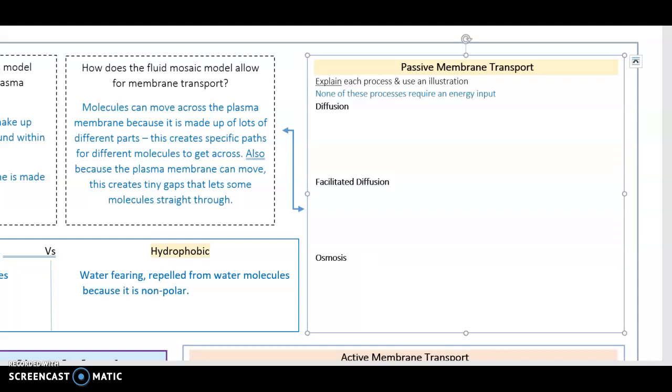So let's start with diffusion. This is the simplest version of all of the way things move across membranes, and it is the net, means overall, passive, means requires no energy, movement of molecules across a semi-permeable membrane, i.e. the plasma membrane, from an area of high concentration of these molecules to an area of low concentration.